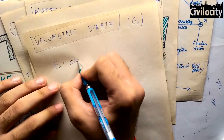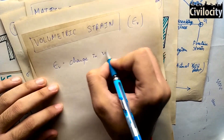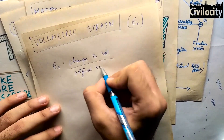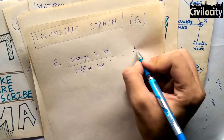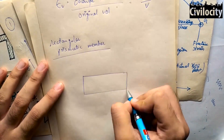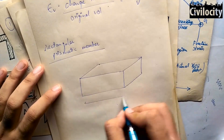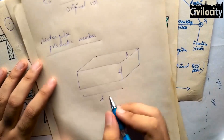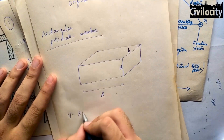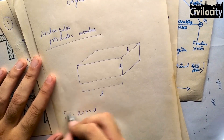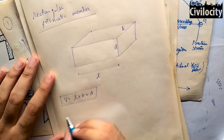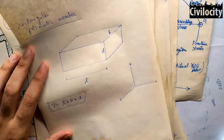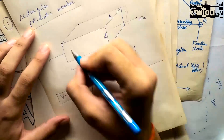Now let's talk about volumetric strain. Volumetric strain is the change in volume divided by the original volume. Let's see how it works for a rectangular prismatic member. Suppose the dimensions are L (length), B (width), and D (depth), so the volume is L times B times D. We now apply a force in the x-direction, producing stress in x and also lateral stresses in perpendicular directions.